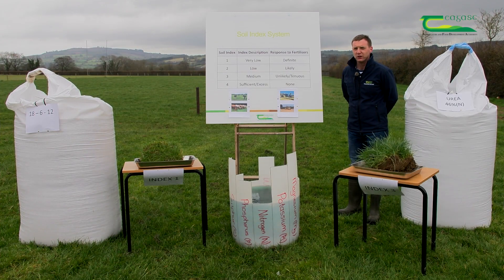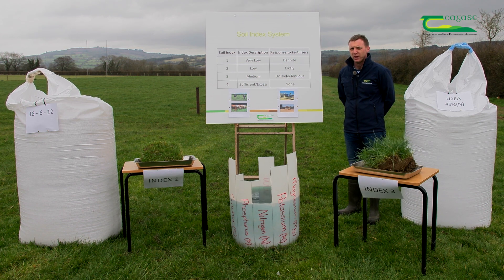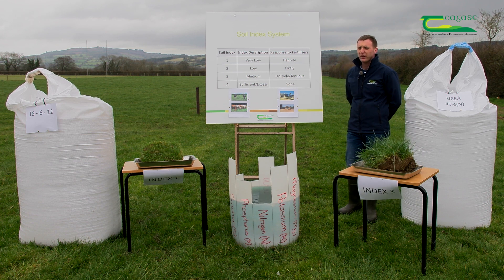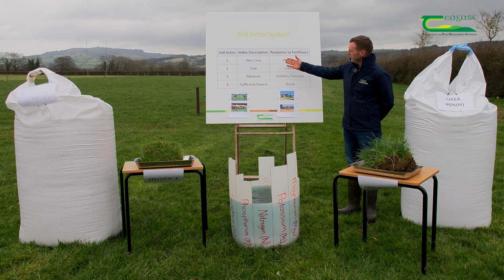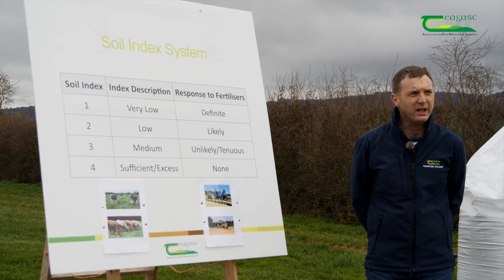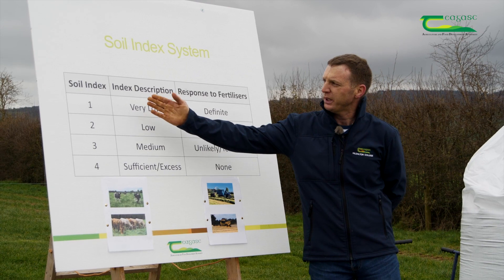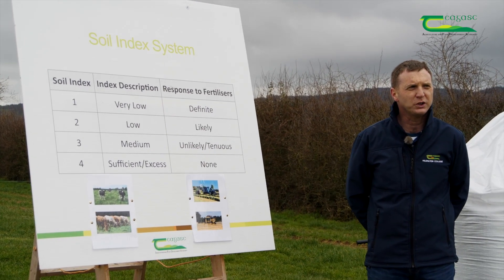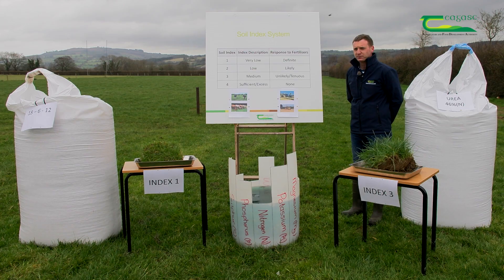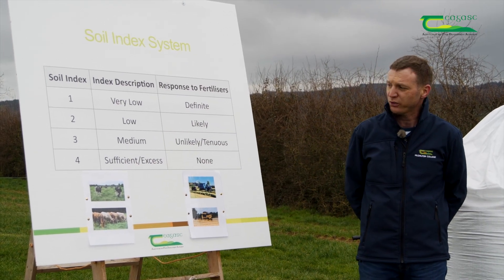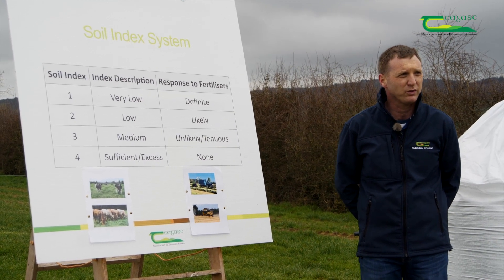Hello, Brian Clancy, Teagasc Kildalton College. Today I want to speak about the soil index system and Liebig's Law of the Minimum. Soil fertility is extremely important for all grassland paddocks. The soil index system runs on a scale of one to four — index one and two being very deficient or low in P and K (phosphorus and potassium). The target is soil index three, which is ideal. Index four means you have luxury or excess amounts of P and K in your soil.